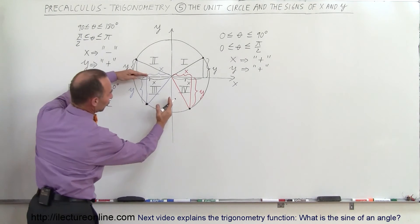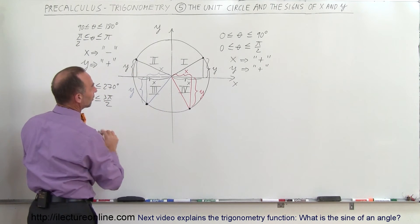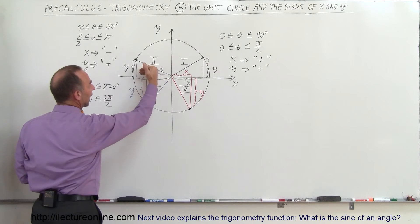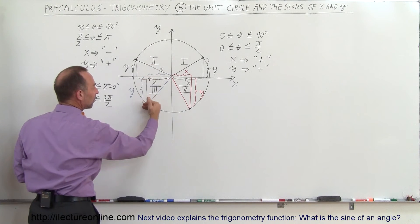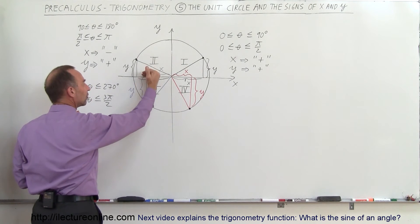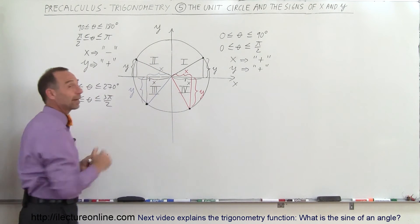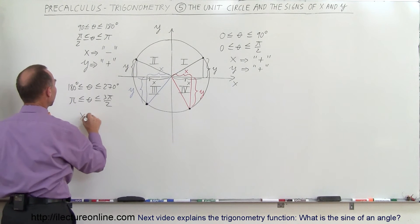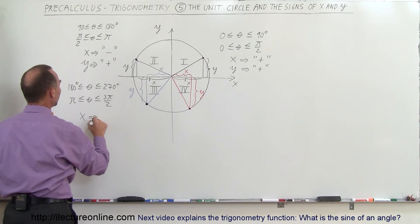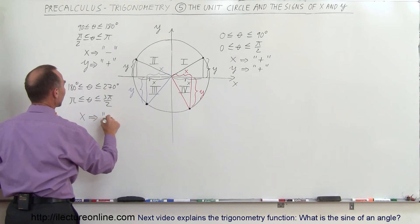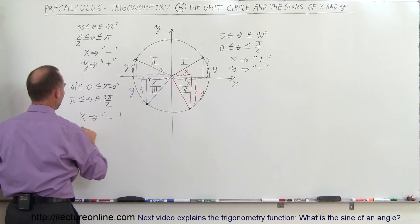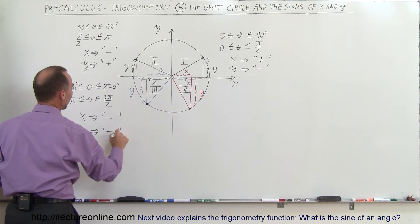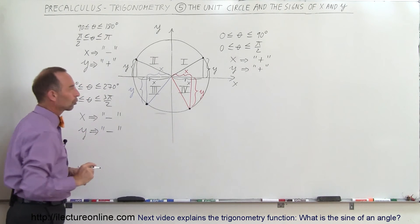Now in the third quadrant, notice that both the x-value will be negative and the y-value will be negative, because we're to the left of the y-axis and below the x-axis. So the x-value will be a negative value and y will be a negative value in the third quadrant.